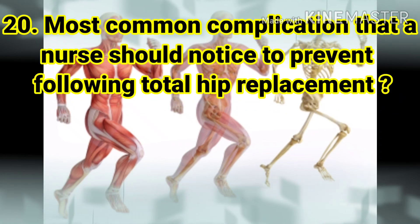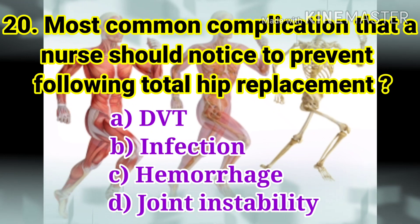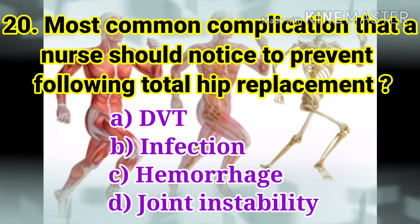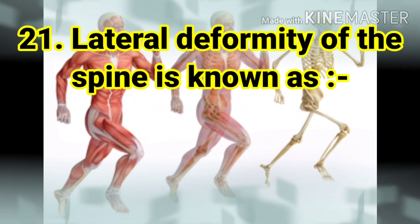The next question: the most common complication that a nurse should notice to prevent following total hip replacement. The options are DVT, infection, hemorrhage, and joint instability. The answer is DVT, meaning deep vein thrombosis.